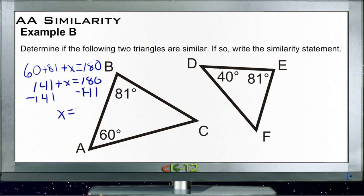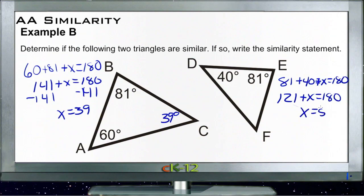141 plus X means if we subtract that 141 from both sides, X must be 39. So this angle over here is 39 degrees. Now over here we have 81 plus 40 plus X equals 180, which gives us 121 plus X equals 180.